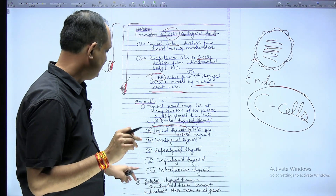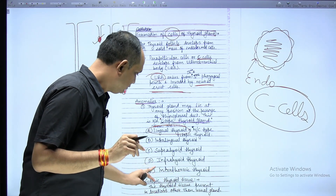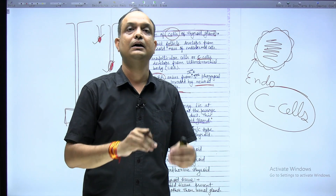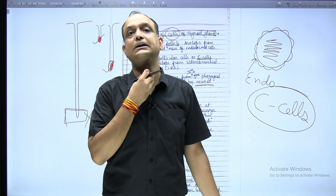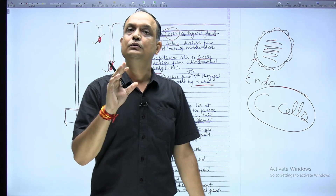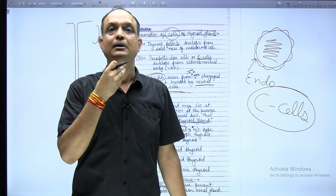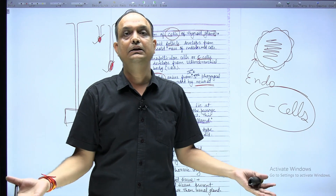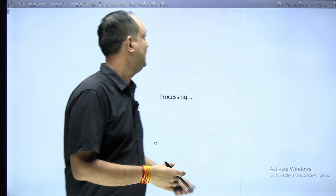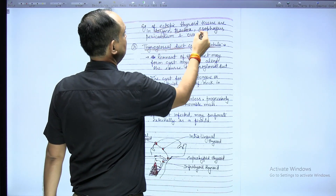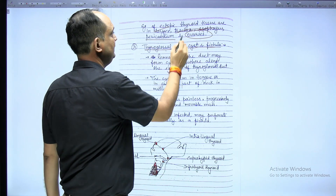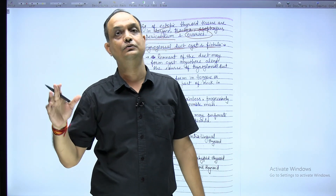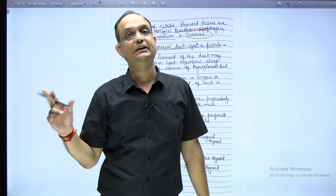What is ectopic thyroid tissue? Ectopic thyroid tissue means thyroid tissue which is present in other parts of the body other than the normal thyroid gland tissue. You have the normal thyroid gland, but apart from this, the tissue is present in any other part of the body like the larynx, trachea, esophagus, ovaries, or pericardium. If thyroid tissue is present in these areas, it is ectopic thyroid tissue.